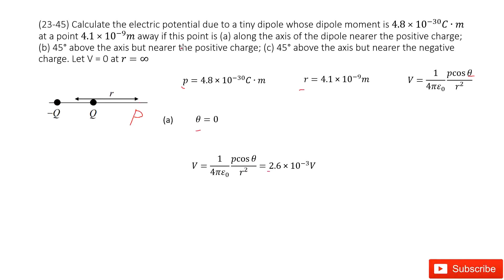The next one tells us this point is 45 degrees above the axis near the positive charge. In this case, P is given, R is given, and theta is 45 degrees. Input all the given quantities, we get the answer.